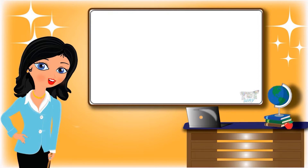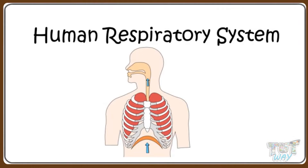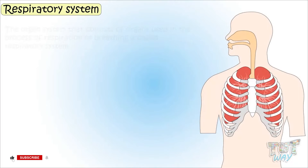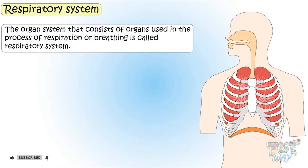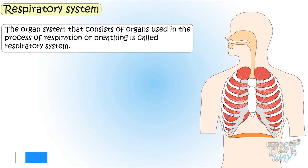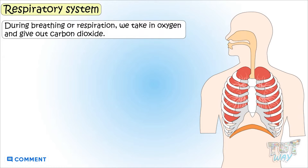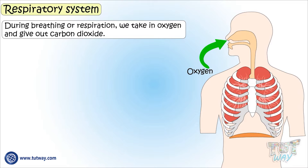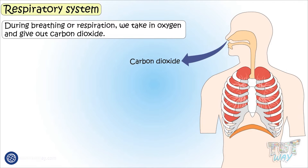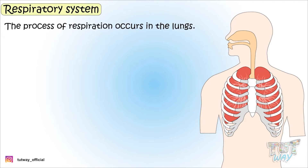Hi kids! Today we will learn about the human respiratory system. So let's start! The organ system that consists of organs used in the process of respiration or breathing is called the respiratory system. During breathing or respiration, we take in oxygen and give out carbon dioxide, and the process of respiration occurs in the lungs.